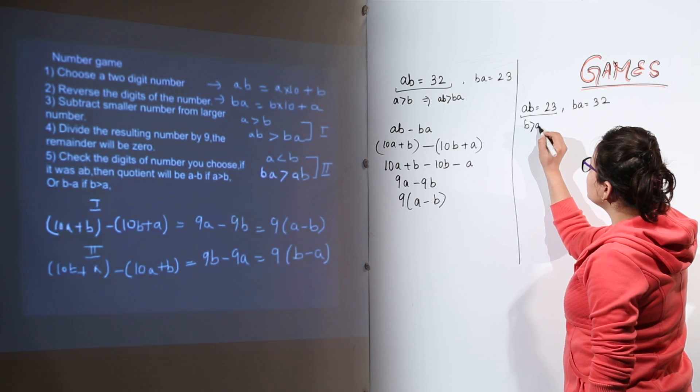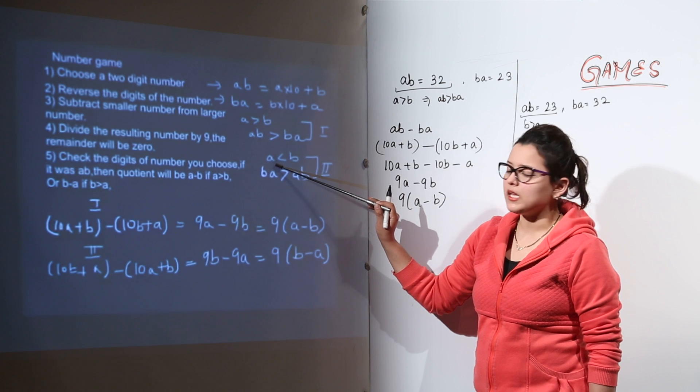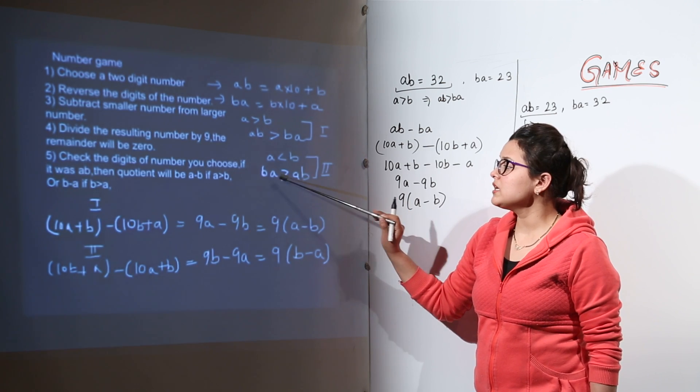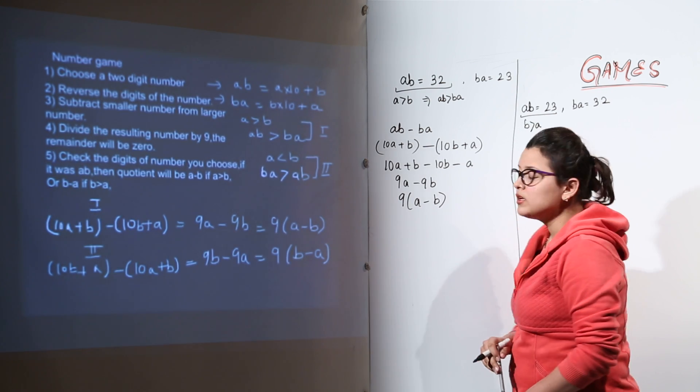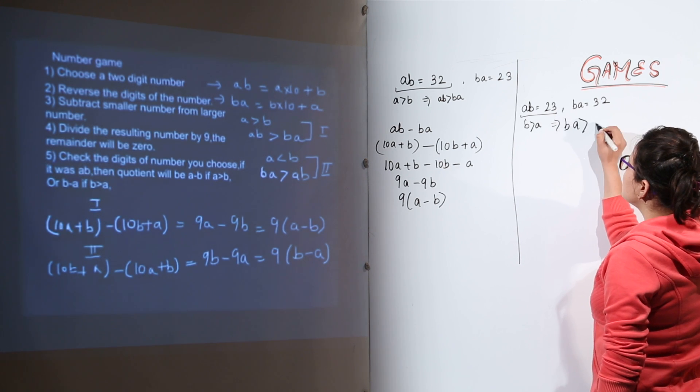That means B is coming greater than A. Now as I have shown if B is greater than A what will happen? Your BA is going to be greater than AB. So we write that here BA is greater than AB.